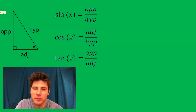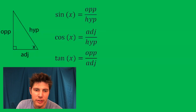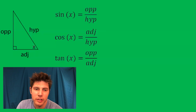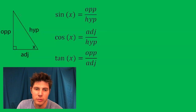Hey guys, so here's a couple formulas for trigonometry. If you have a right triangle and you have an angle x that you're concerned about, the opposite side is the one opposite the angle, the adjacent side is the one that touches the angle, and the hypotenuse is the one that's opposite the right angle.